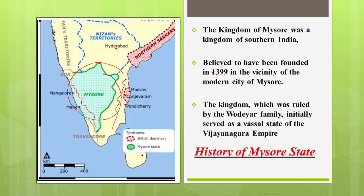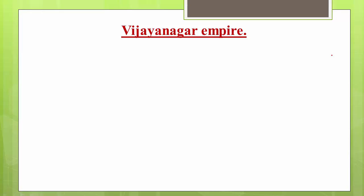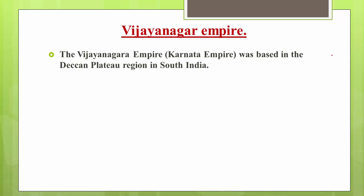It is believed the kingdom was founded in 1399 and was ruled by the Wodeyar family, which initially served as a vassal — a feudal state — of the Vijayanagara Empire. The historical sequence was: Vijayanagara Empire, then the Wodeyars, then Haider Ali, then Tipu Sultan, and finally the British annexed the Mysore state.